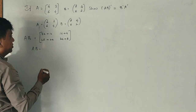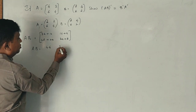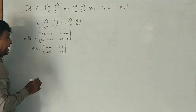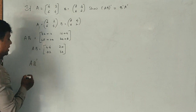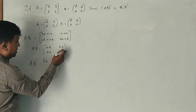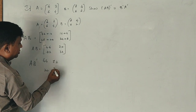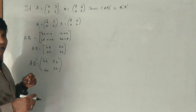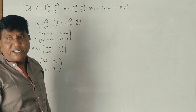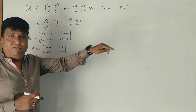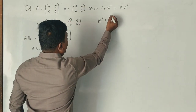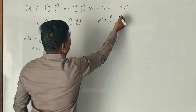So AB result: 32 plus 12 is 44, it is 20, it is 72, it is 30. Now we have AB equal to [44, 20, 72, 30]. Now AB inverse equals B inverse into A inverse. First we have B inverse, then B inverse into a column, then A inverse into a column.